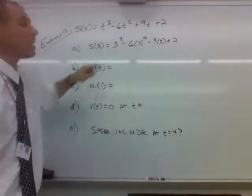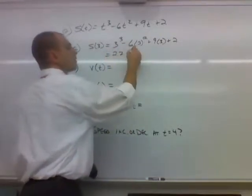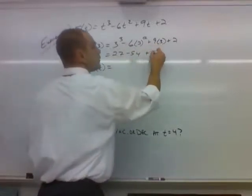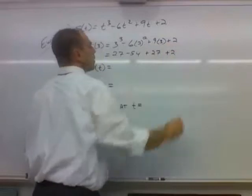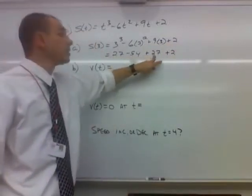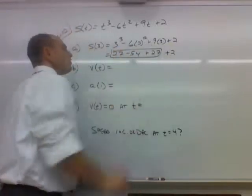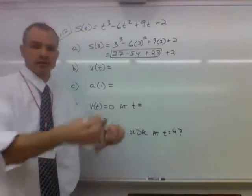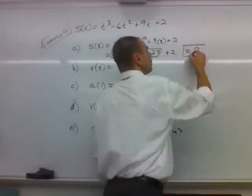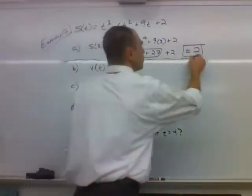Well, 3 cubed is 27, and 3 squared is 9 times 6 is 54, and 3 times 9 is 27, and then we have plus 2. So we have 27 minus 54 plus 27 plus 2. Well, all of this, 27 minus 54 plus 27, that's 0, right? Then it's combined to 0. So 0 plus 2 is equal to 2. So that's our position at time t equals 3.